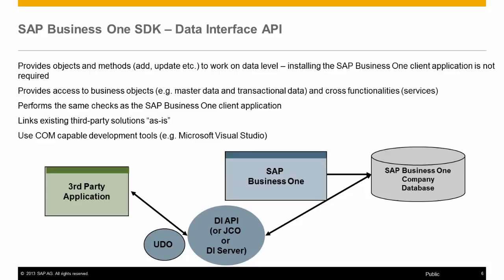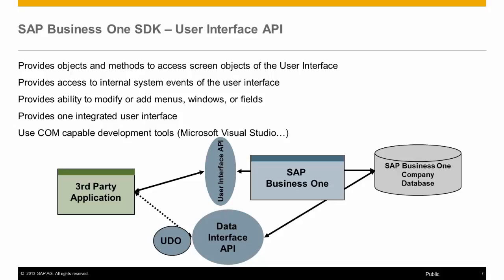The DI API, or Data Interface API, allows access to SAP Business One data through the use of object-oriented programming, such as VB.NET, C#, and many others that can interact with COM objects. The DI API can be used to programmatically integrate external business systems. Available business objects consist of master data and transactional data types and allow for add, update, and delete. The same business logic used for data validation by SAP Business One is utilized by the DI API.